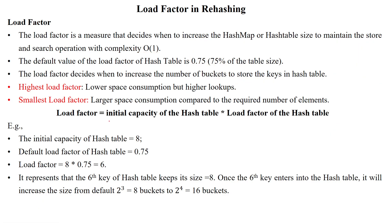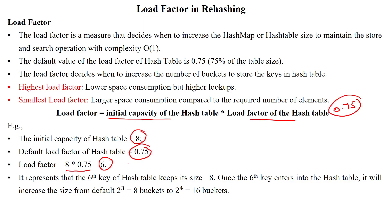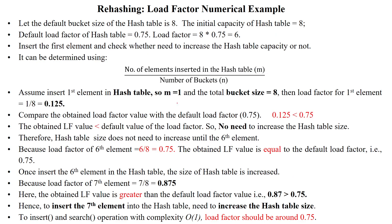The load factor can be calculated using the formula: initial capacity of the hash table multiplied by the load factor. In our case, the hash table size is 8, and we fix the load factor at 75%. So 8 × 0.75 gives the number of elements allowed — 6 entries. When inserting the 6th element, we should increase the hash table size. A numerical example has been given to calculate the load factor before increasing the hash table.